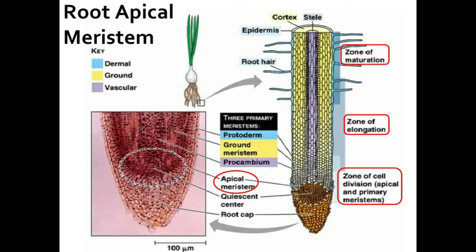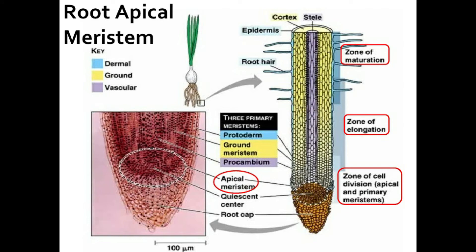A plant has a growth pattern called open growth throughout its life. The plant adds new organs such as branches, leaves, and roots, enlarging from the tip of the root and shoot, but the rate of growth is not uniform throughout the plant body. At the beginning the growth is slow, but gradually it becomes rapid, attains a maximum, then gradually slows down. In vascular plants, growth occurs throughout the activity of meristems.